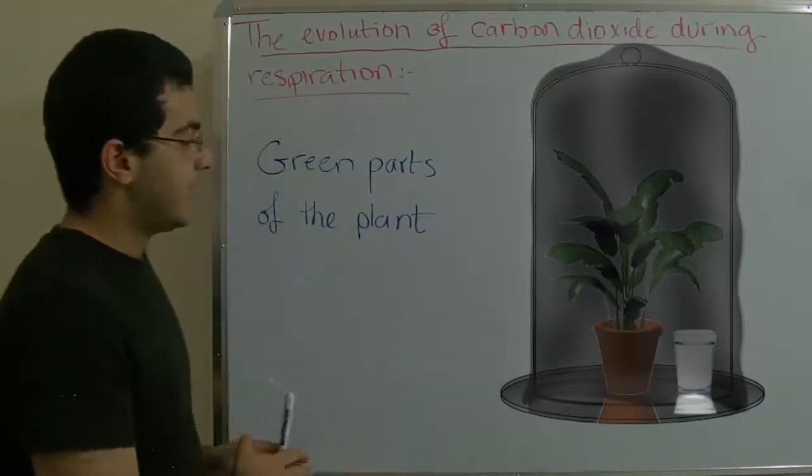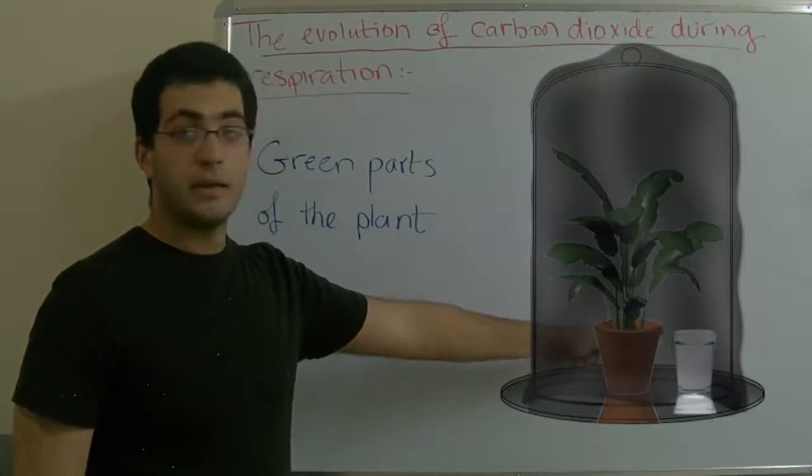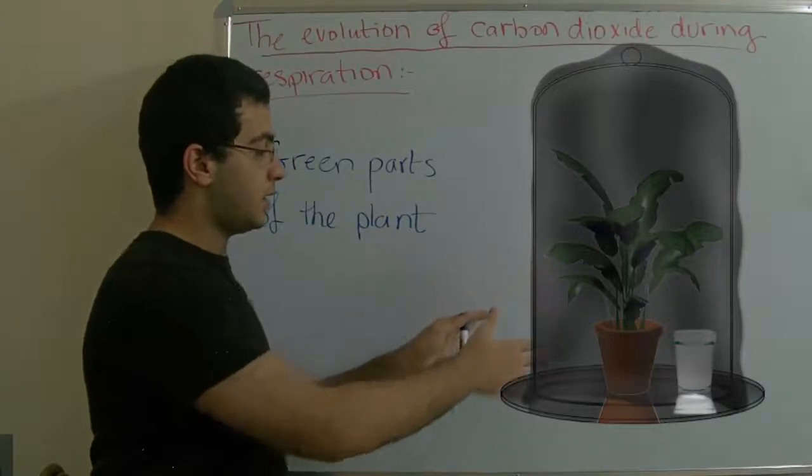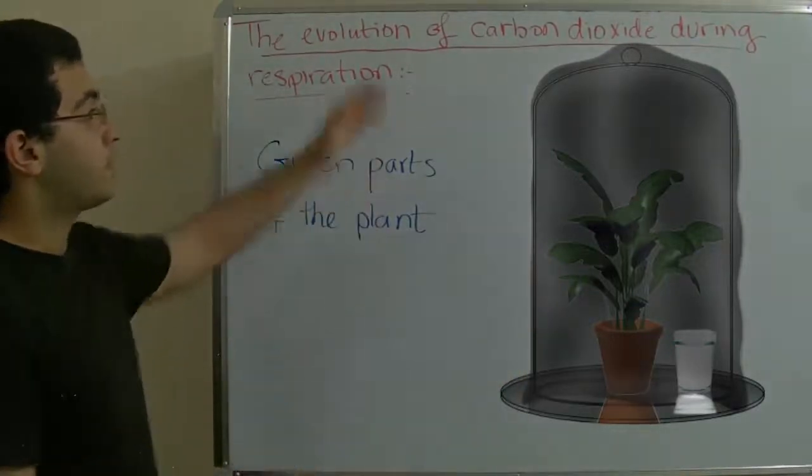Then we are going to put a glass with lime water beside the pot, and this is also under the upside down beaker. This is going to prove the evolution of carbon dioxide.